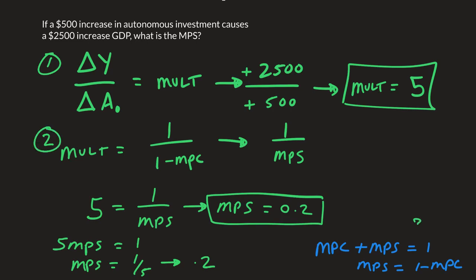We also needed to know how to get MPS once we know MPC. With all this together, we can answer the question: if there is some increase in autonomous investment that causes a multiplied increase in GDP, we can solve for that MPS.